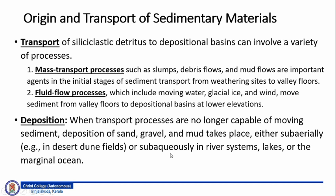The next process is deposition. When mass transport processes or fluid flow processes are no longer capable of moving sediment, deposition of this solid residue or even dissolved fluids happens. The solid residues include deposition of sand, gravel and mud, which takes place when the transport processes are no longer capable of moving sediment. They may be subaerially deposited — as in the case of desert dune fields — or also transported subaqueously in cases of river systems, lakes or marginal oceans.